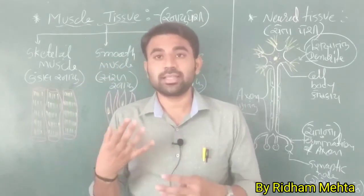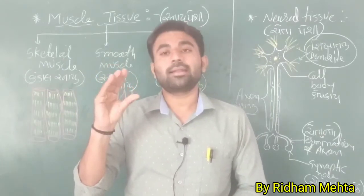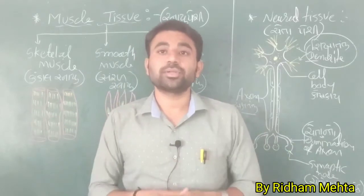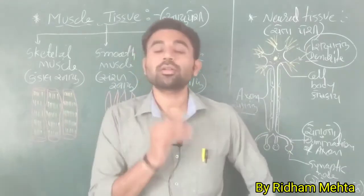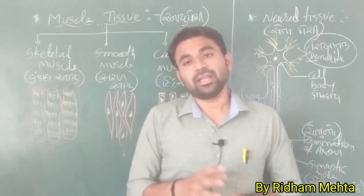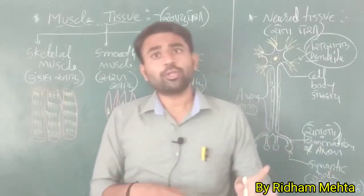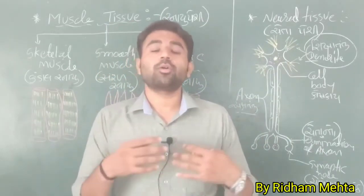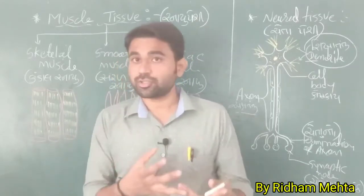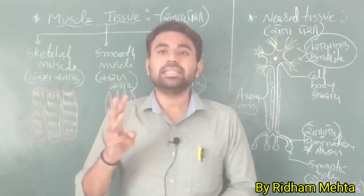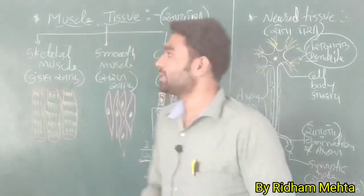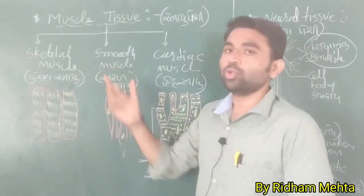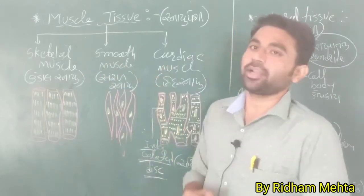Contraction and relaxation occurs in muscles, and with the help of this muscle contraction you can do your work. According to their location, shape, and structure, muscles are of three types. The first one is skeletal muscles, the second one is smooth muscles, and the third one is cardiac muscles.